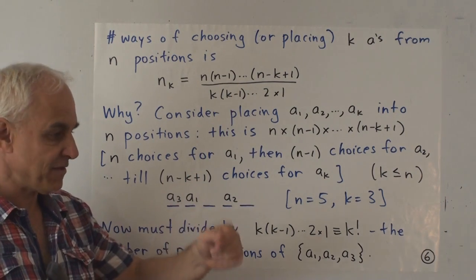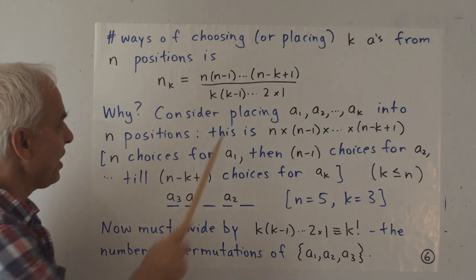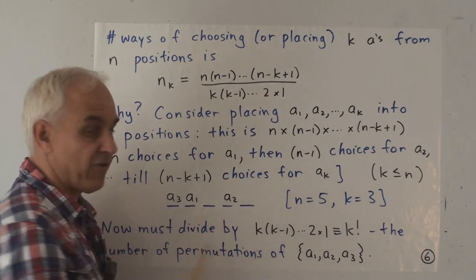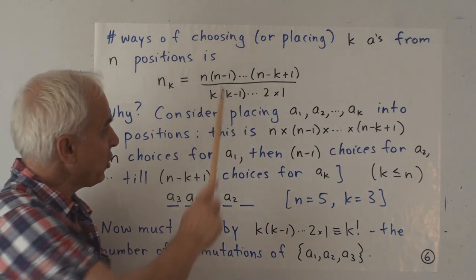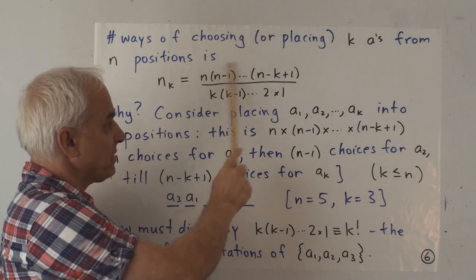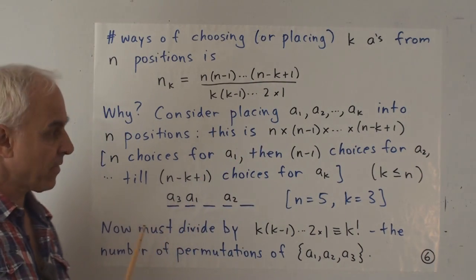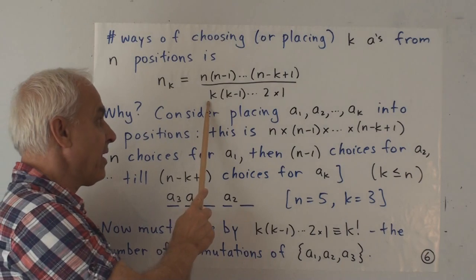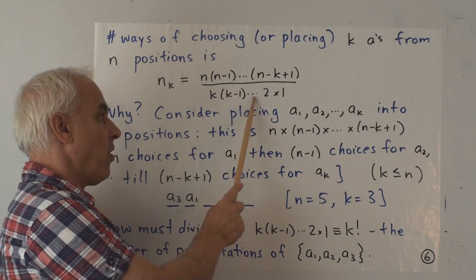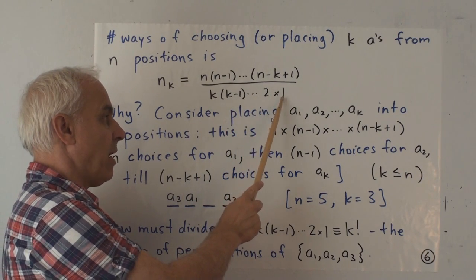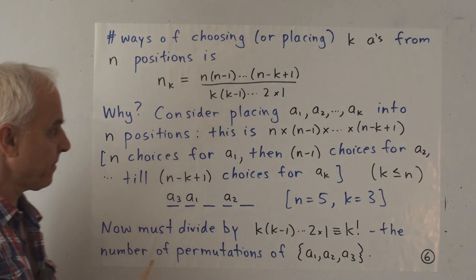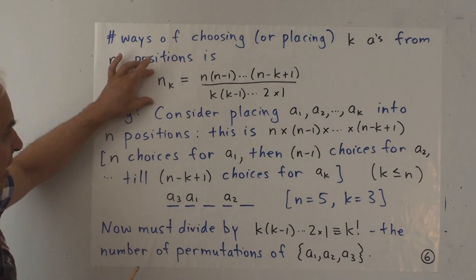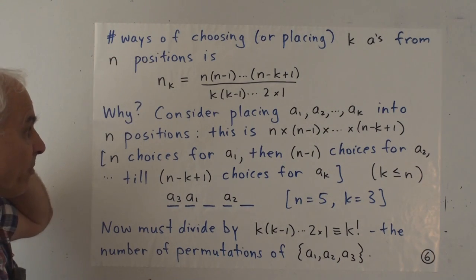It's n times n minus 1 times n minus 2, so multiplying successively smaller, smaller numbers, down to n minus k plus 1, ensuring that there are exactly k terms in this numerator. And we have to divide by k times k minus 1 all the way down to the product 2 times 1.